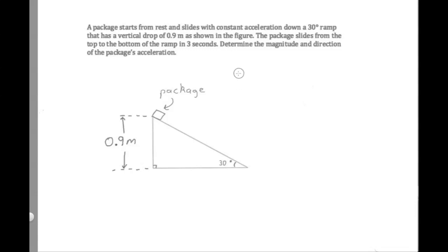Now I would like to do a physics problem that will illustrate how we can use the trigonometry skills we've been learning to help us solve a problem in physics. Trigonometry is just a small part of this problem, but that's pretty typical of using trig in physics. Usually the trigonometry will be a small but important part. This will illustrate a typical way that trigonometry can come up in your physics problems.